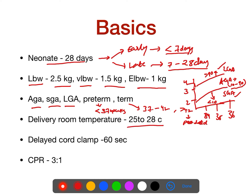What is the ideal delivery room temperature to be maintained? 25 to 28 degrees is the ideal delivery room temperature. We are also following delayed cord clamping, meaning we clamp the cord after 60 seconds of life. The use of delayed cord clamping is that it gives sufficient time for transfer of blood from maternal circulation to the neonate, thus preventing anemia.